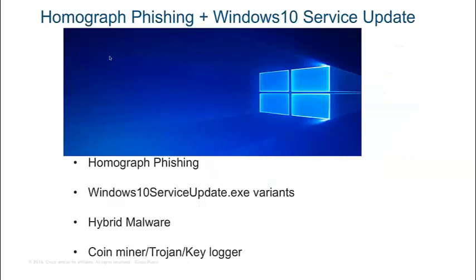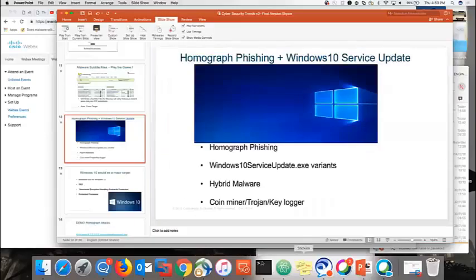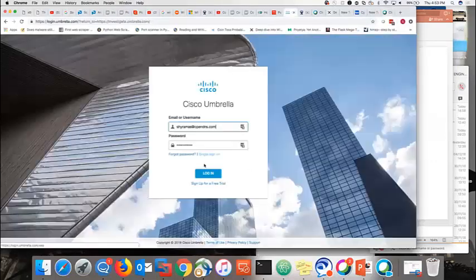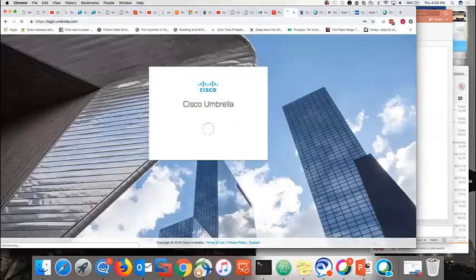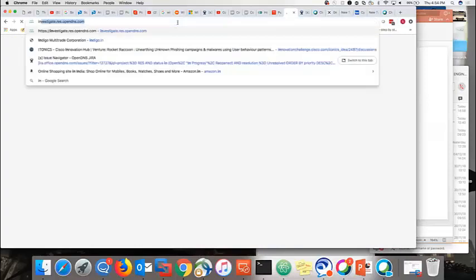I'll now show you a live demonstration of homograph phishing and Windows 10 service update attacks using Cisco Umbrella's Investigate tool, which we use to look at good, bad, and ugly domains.